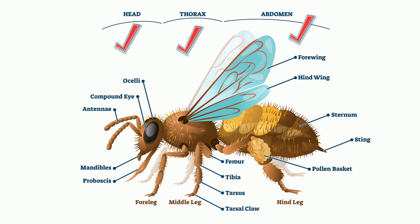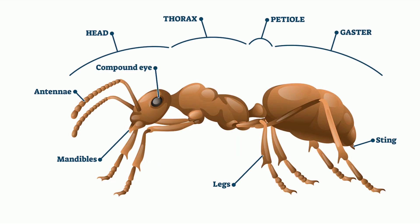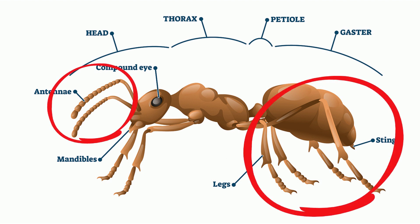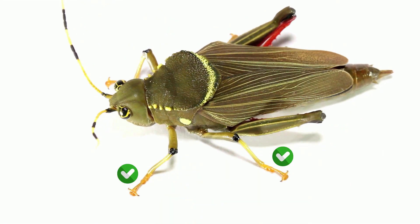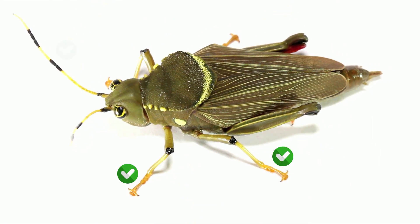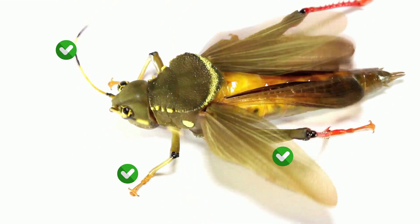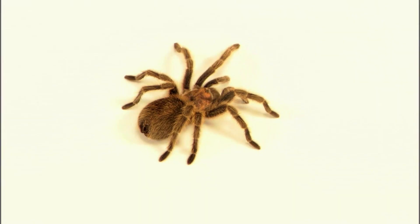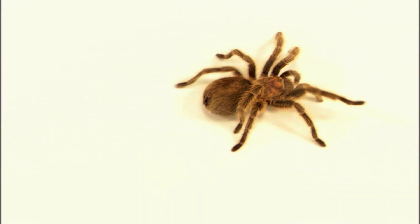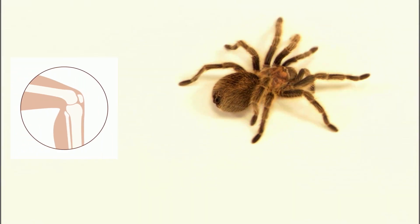Segmented appendages. So what's an appendage? An appendage is a portion of the arthropod that sticks out from its body and has a function. Examples of appendages include legs, arms, and antennae. The appendages of many arthropods are made of joints. A joint is the location where two parts meet.